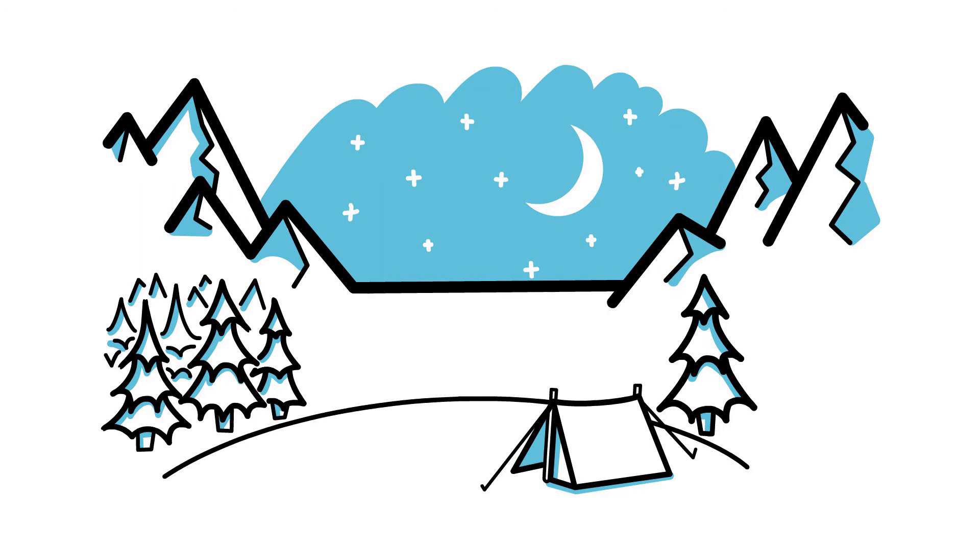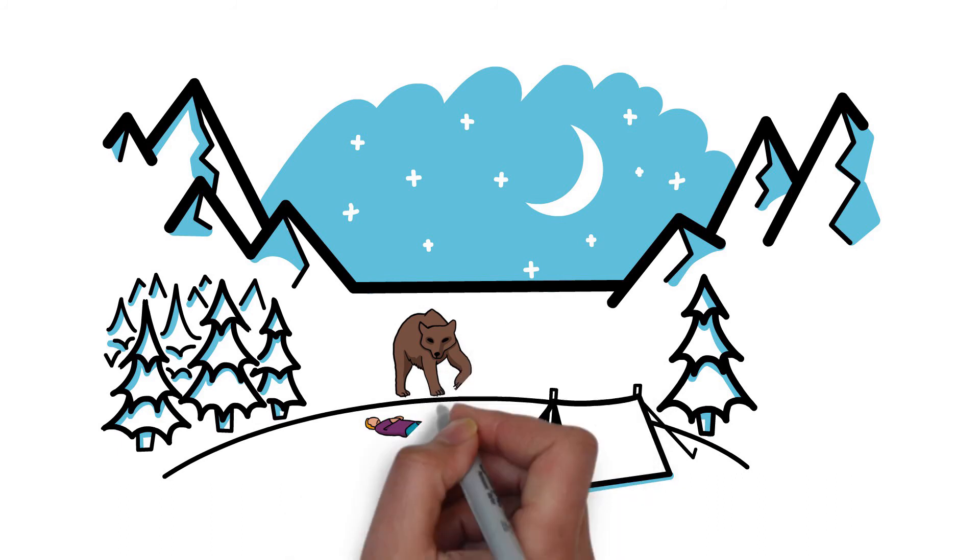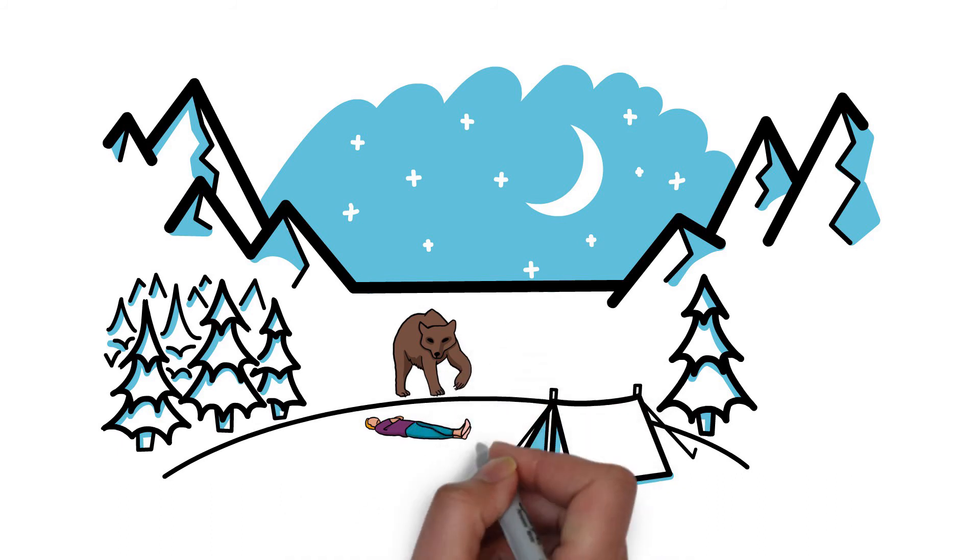From an evolutionary point of view, sleeping in one long block just makes no sense at all. Being still and unaware of our surroundings would have made us easy prey to other animals.